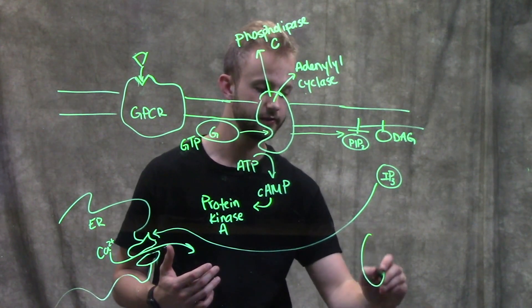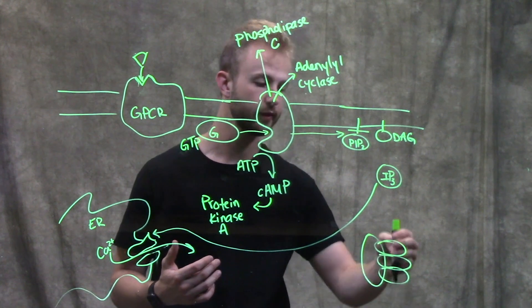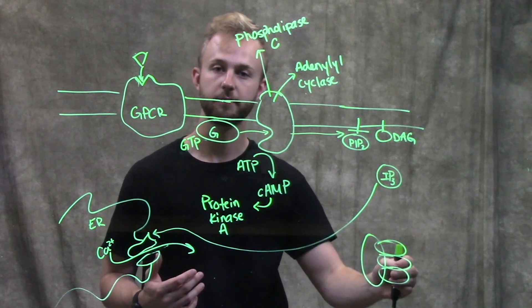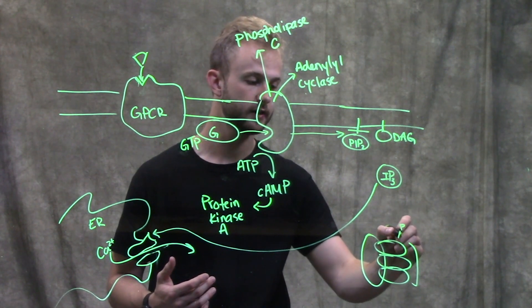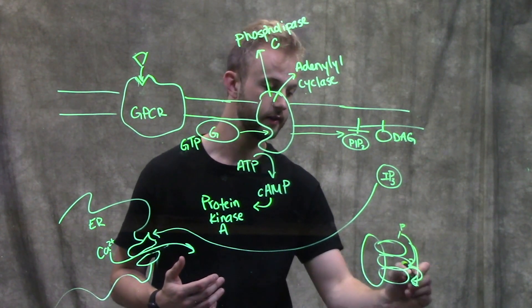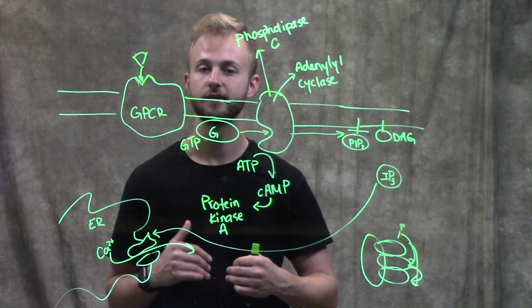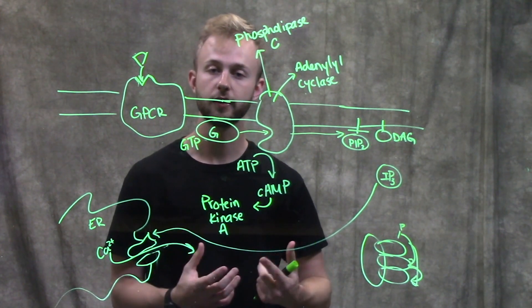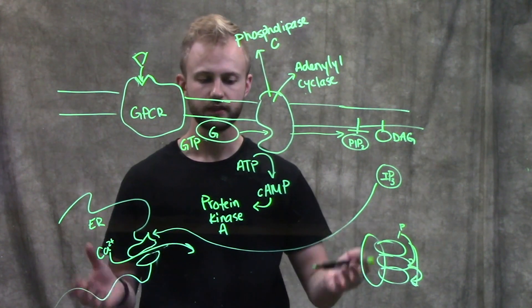For example, if we have this protein right here, it can hold let's say three protein kinases that are in the signaling pathway all right next to each other. That way, when this one becomes activated, it can activate the next one and then the next one and so on and so forth. And it just makes the entire process of signal transduction much quicker and more efficient.